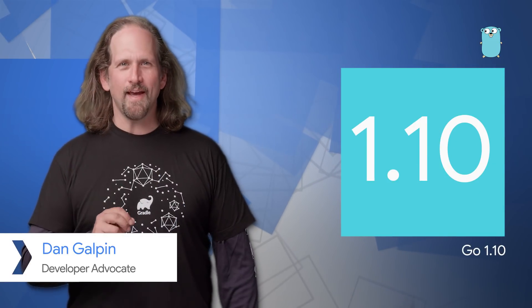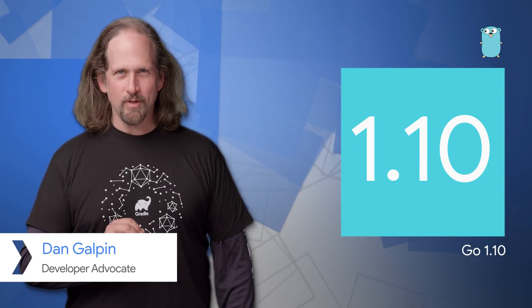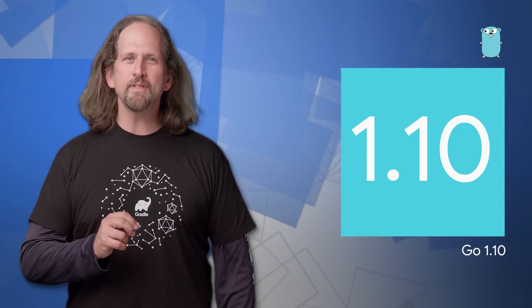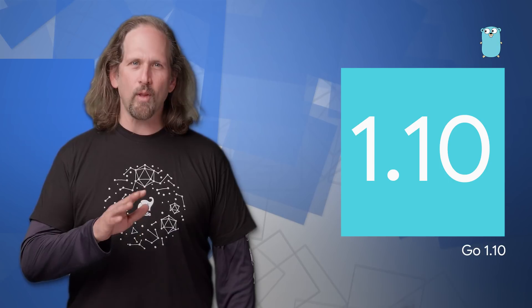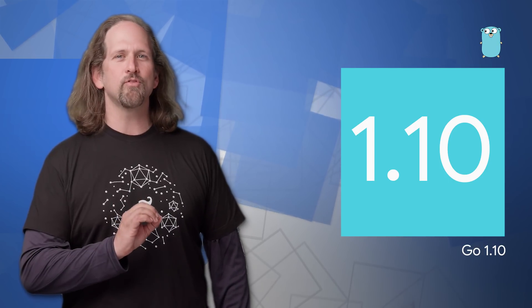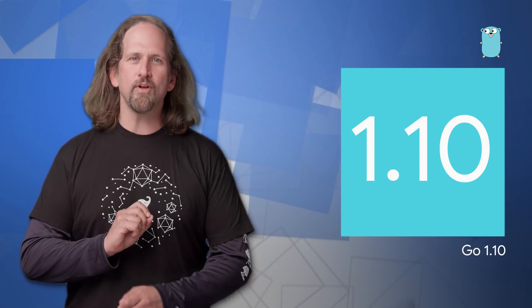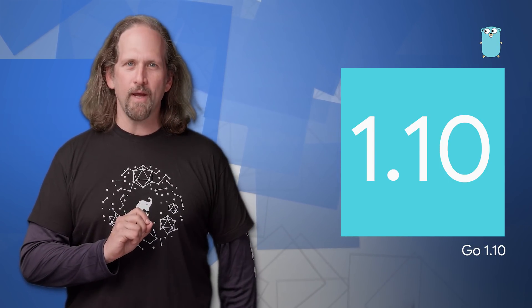Go 1.10 is now available. It includes automatic caching of build and test results, as well as hundreds of other smaller changes. Links to the release notes and the download page are on the post.